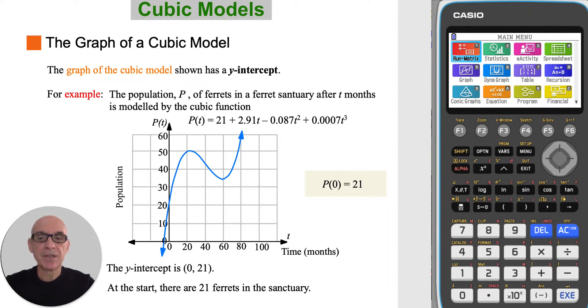In the example shown here, the population of ferrets in a sanctuary is modeled by the cubic function given. The graph has a y-intercept at the point 0, 21. So at the start, there are 21 ferrets in the sanctuary.